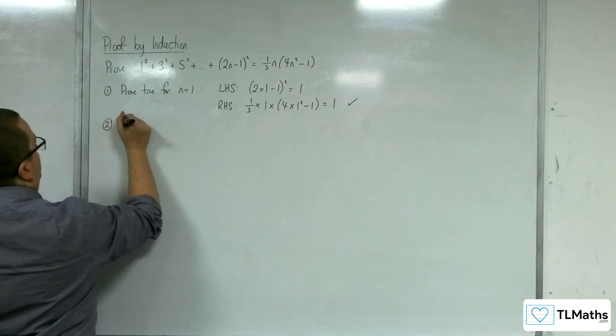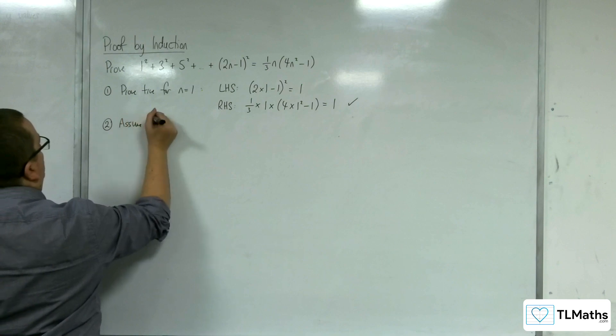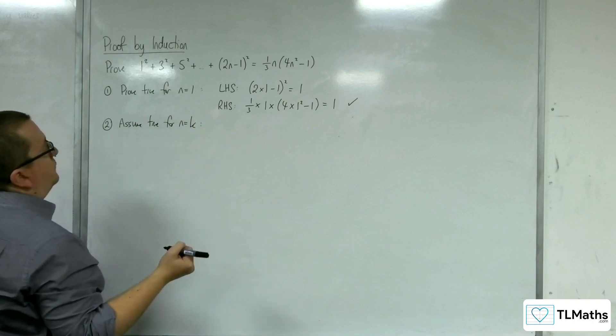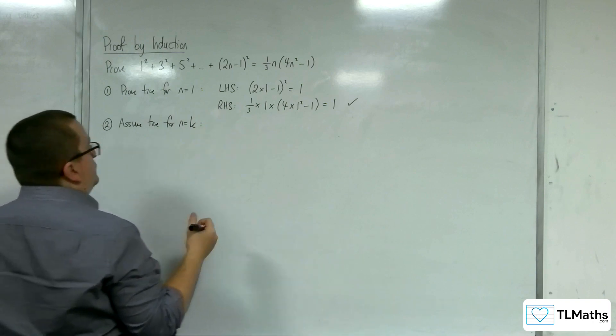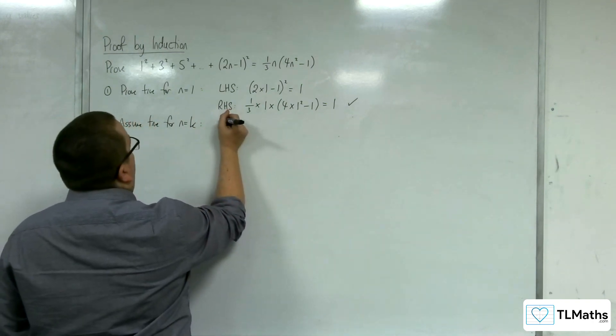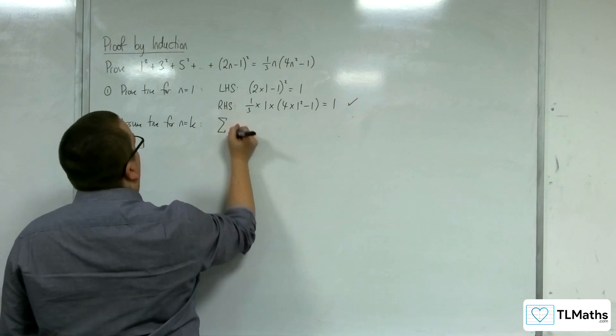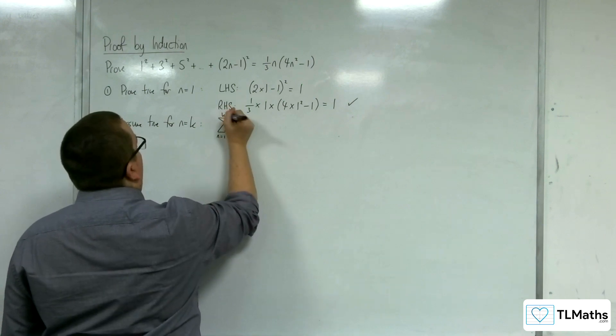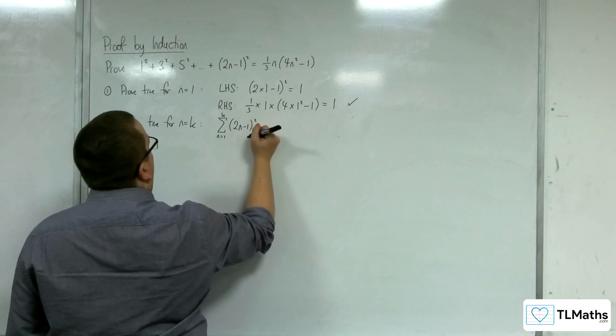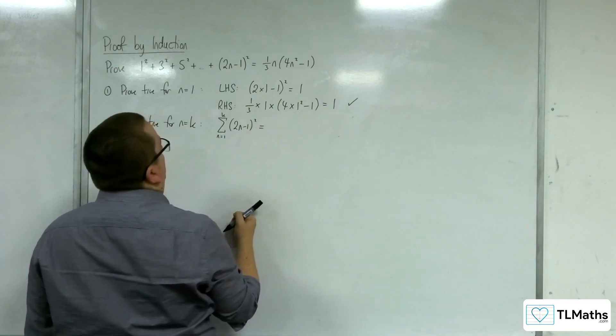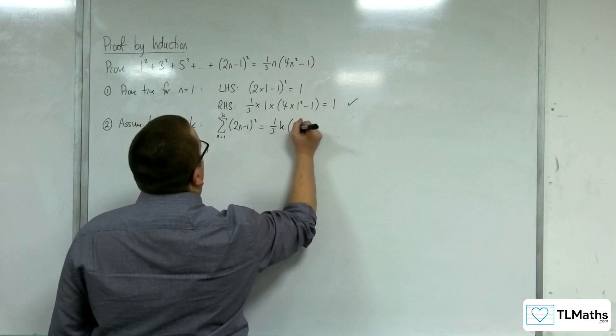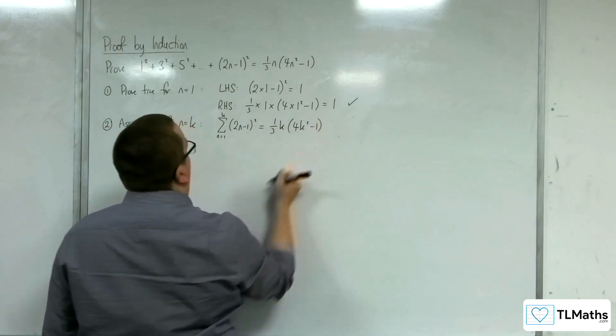Step 2, assume true for n equals k. So, we would be saying then that the sum from n equals 1 up to k of 2n minus 1 squared is equal to 1 third k times 4k squared minus 1.